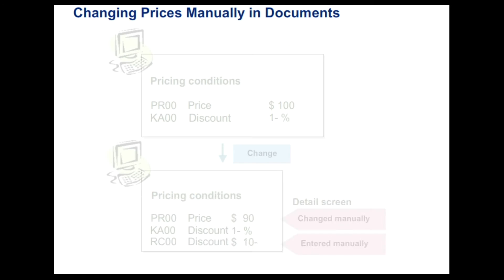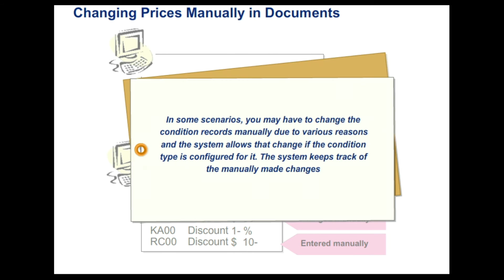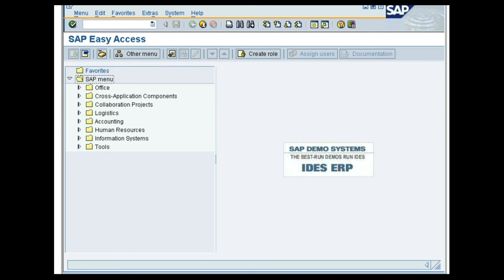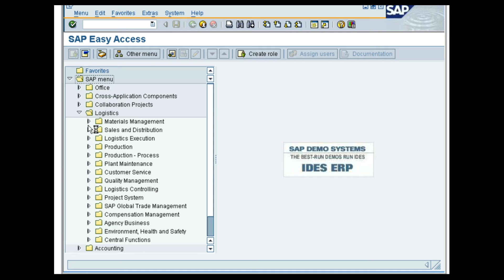Changing prices manually in documents. In some scenarios, you may have to change the condition records manually due to various reasons and the system allows that change if the condition type is configured for it. The system keeps track of the manually made changes. In this demo, you will see how manual pricing is entered in a standard sales order. In the SAP Easy Access screen, follow the menu path Logistics, Sales and Distribution, Sales, Order, Create.